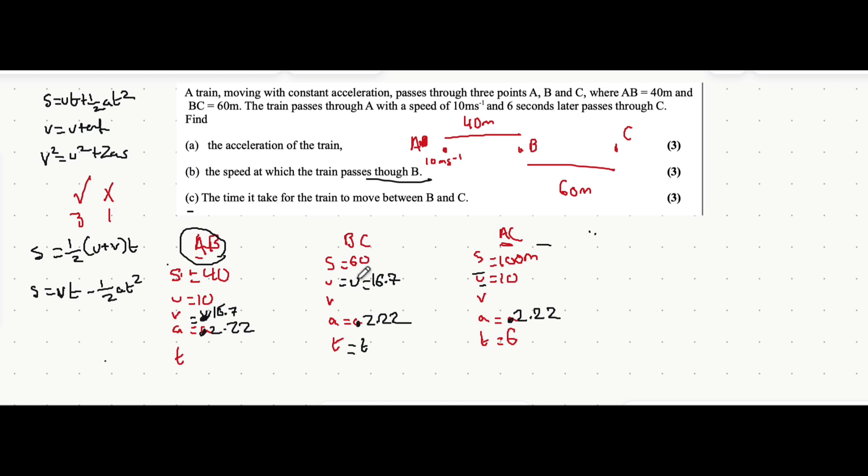From here it's just substitution and solving equations. The equation linking s, u, a, and t is s = ut + ½at². So 60 equals 16.7t plus a half of 2.22 times t squared. A half times 2.22 is 1.11, so this becomes 1.11t² plus 16.7t minus 60 equals 0, which is a quadratic with the t² term first, then the t term, then minus 60.